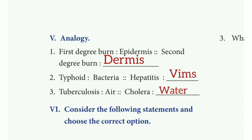Analogy. 1st one: First degree burn is to epidermis; second degree burn is to dermis. 2nd one: Typhoid is to bacteria; hepatitis is to virus. Last one: Tuberculosis is to air; cholera is to water.